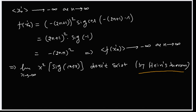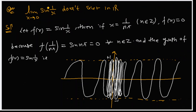Now we will see that the limit of x tending to 0 of sin(1/x) does not exist. We have a question. First, we take one sequence: xₙ equal to 1/(nπ) for all n belonging to the integers. As x tends to 0, substituting xₙ = 1/(nπ) gives sin(nπ) equal to 0.